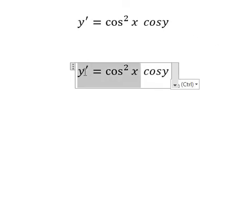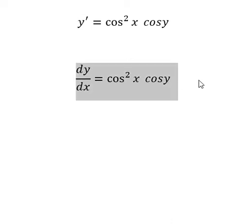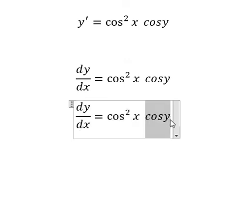We change y' by dy over dx. Next, cosine y I will put on the left, dx we put on the right.